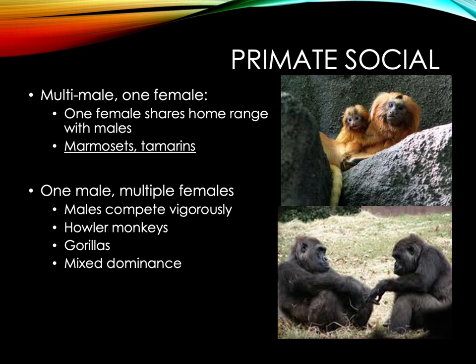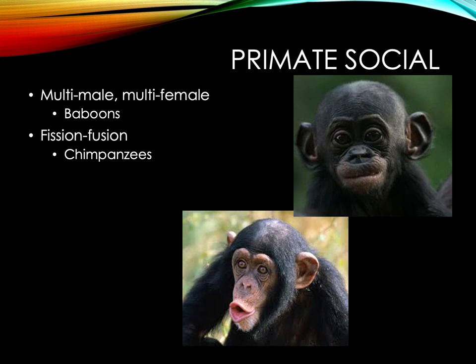The next type is multi-male, multi-female, where one female shares a home range with males — marmosets and tamarins are an example. Then there is one male, multiple females — gorillas and howler monkeys are a classic example, where males are often much larger than females due to sexual dimorphism and must compete vigorously for access to females. Finally, multi-male, multi-female groups — baboons, chimpanzees, and bonobos — though chimpanzees and bonobos engage in a fission-fusion system, banding together when resources are plentiful and separating when they become scarce.